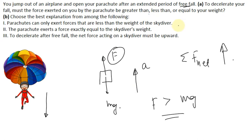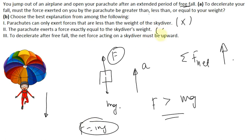Looking at the options: the first says the parachute can only exert a force less than the skydiver's weight — this is completely wrong. The second says the parachute exerts a force exactly equal to the skydiver's weight, but if forces are balanced acceleration is zero, so this is also wrong. The third statement is correct: to decelerate after freefall, the net force on the skydiver must be in the upward direction.